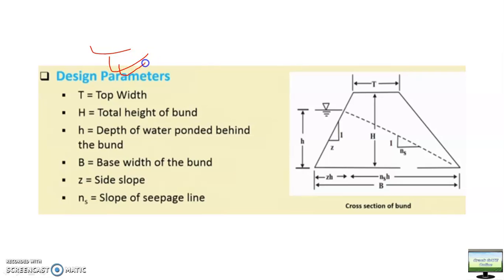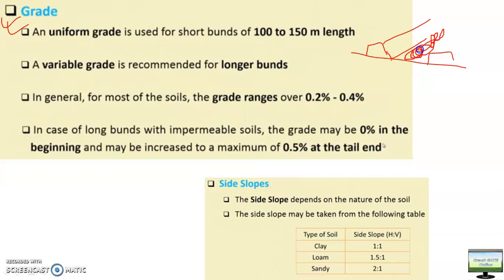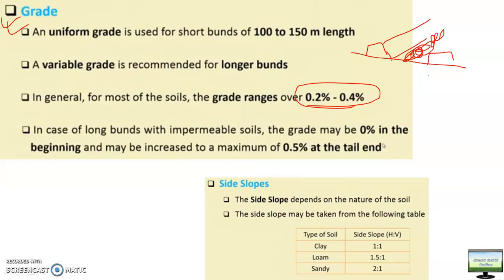The main difference is that the distance between two bunds acts as a channel for disposal, not storage. A longitudinal slope must be provided, and that slope ranges from 0.2 to 0.4 percent. If the bund length is very long, a variable slope may be used — one slope up to a certain distance and another beyond. If the bund length is small, a uniform slope of about 0.3 percent is used.